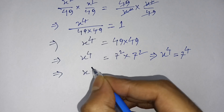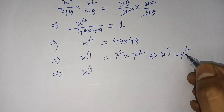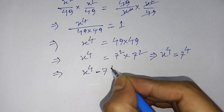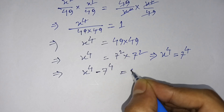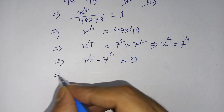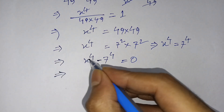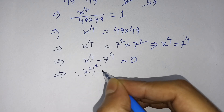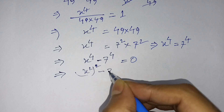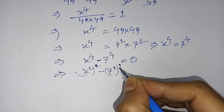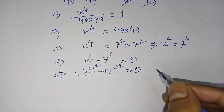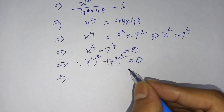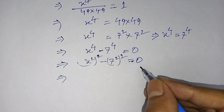Then, moving 7 to the power 4 to the left side, it will be x to the power 4 minus 7 to the power 4 is equal to 0. I can write x to the power 4 as x squared squared, so it becomes x squared squared minus 7 squared, equal to 0. I apply the a squared minus b squared formula here.